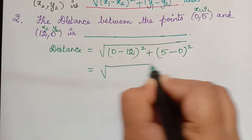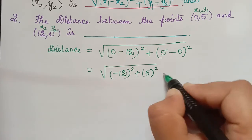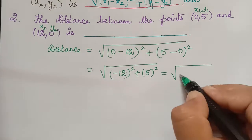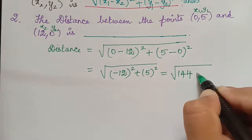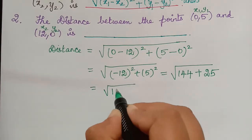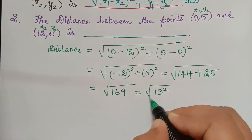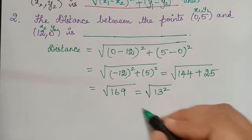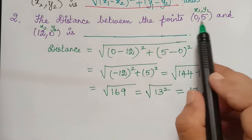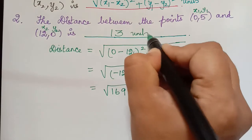minus y2 is 0) whole square. This equals square root of (-12) whole square plus 5 square. The negative sign disappears when squared, giving square root of 144 plus 25, which equals square root of 169. Since 169 is 13 squared, the square root and square cancel, giving 13 units. Therefore the distance between (0, 5) and (12, 0) is 13 units.